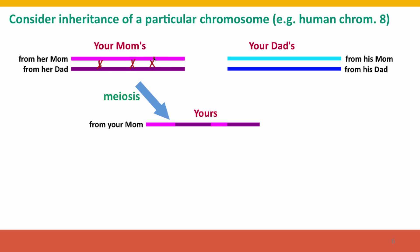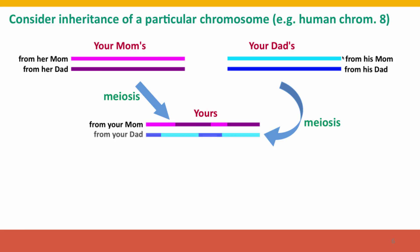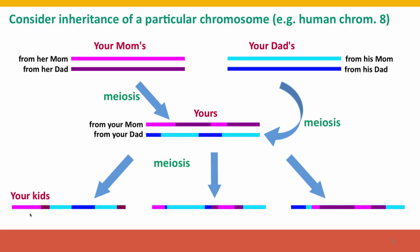So the chromosome you inherit has segments from your grandmother, from your grandfather, from your grandmother, from your grandfather. The same is true for the chromosome you inherit from your father — it's a new combination of the different versions he got from his two parents. When you have children, your gametes will contain new combinations produced by more crossing over.